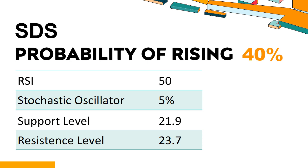The current stochastic oscillator of SDS is 5%. When the indicator falls below the 20 level, it is usually considered oversold, indicating that a price rebound or recovery is likely for the stock. An oversold condition occurs when the stock price falls too fast and too much in a short period of time, which may indicate that the selling pressure has exhausted.